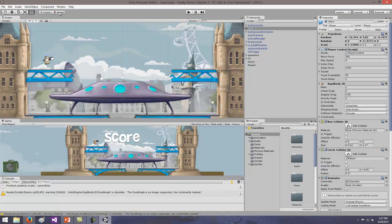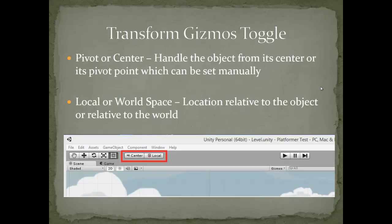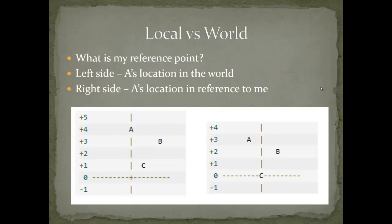The Local and World setting is the object's location relative to itself or relative to the world. For example, looking at an object from a world view, it might be centered on screen; but from a local view relative to the camera's position, it might appear slightly to the left. Most of the time we leave that on Local and view things from the camera's point of view. We don't touch that one much, but in advanced simulation we may play with it.